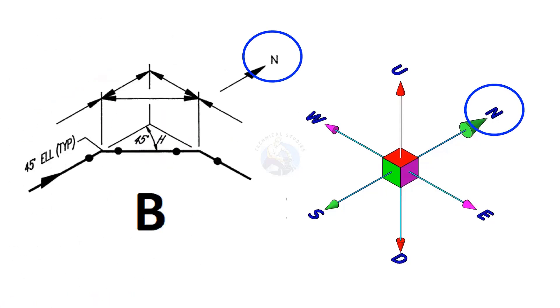In this drawing, the piping goes to the north direction, turns and travels to the north-east 45 degrees. Again, turns to the east direction 45 degrees.